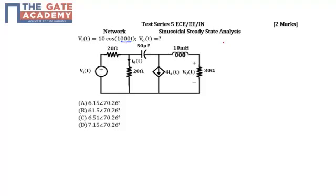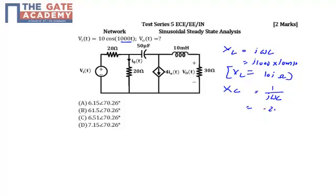So first find out the value of the reactive elements. My XL will be equal to jωL. Omega is 1000, L is given as 10 millihenry, so XL will be equal to 10j ohms. Second, let's find out the value of XC which is 1 upon jωC. Again omega is 1000, capacitance is given as 50 microfarad. So my XC will be equal to minus 20j ohm.